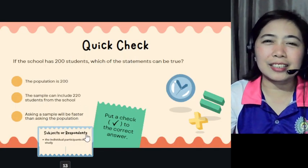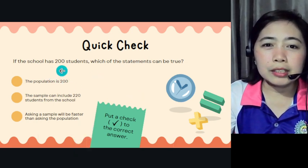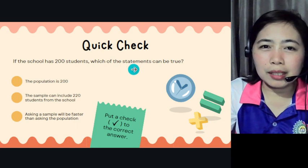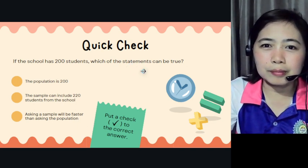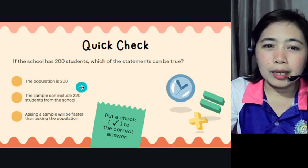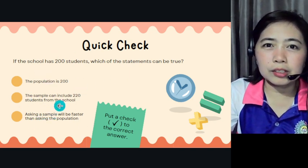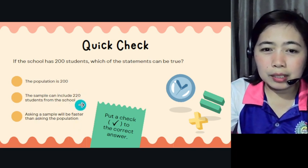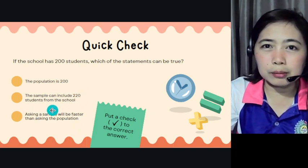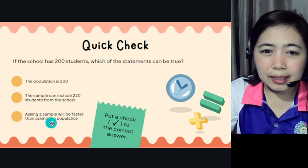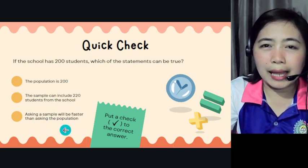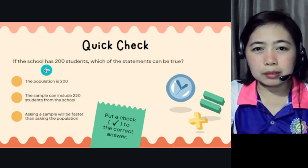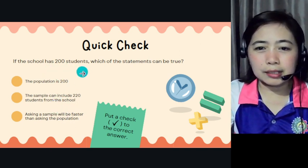Here's a quick check about population. If a school has 200 students, which of the following statements can be true? A: The population is 200. B: The sample can include 220 students from the school. C: Asking a sample will be faster than asking the population. Which one is true about getting a sample population?